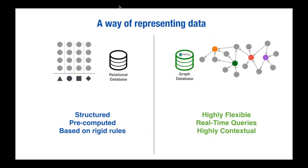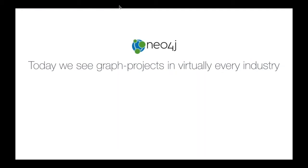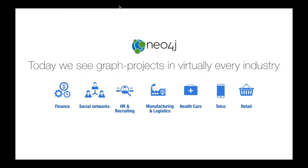Neo4j is the world's first off-the-shelf graph database, designed to derive value from all these data relationships. Today we find graph projects in virtually every industry — from finance to social networks, logistics, HR and recruiting, healthcare, manufacturing, telco, and today's subject, which is retail.